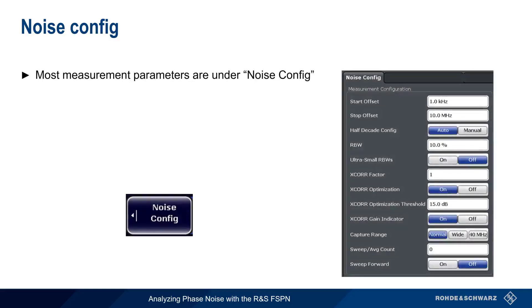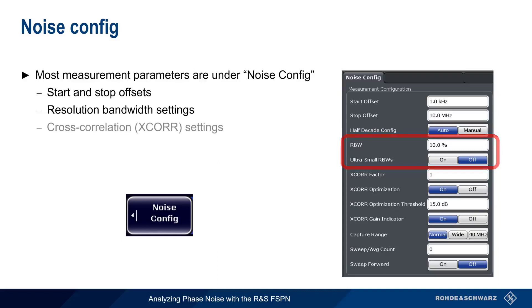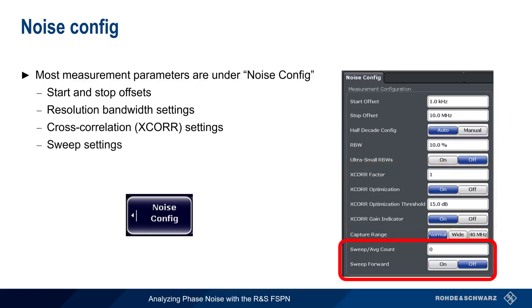Once a signal has been acquired, most phase noise measurement parameters are specified using noise config. These include configuring the start and stop frequency offsets, the resolution bandwidth, and cross-correlation settings. We'll cover these first three groups of parameters in much more detail. Sweep settings can be used to increase the sweep or average count, which can help smooth the trace. Sweep forward causes the phase noise plot to be drawn from right to left, that is, from smallest to largest offset.